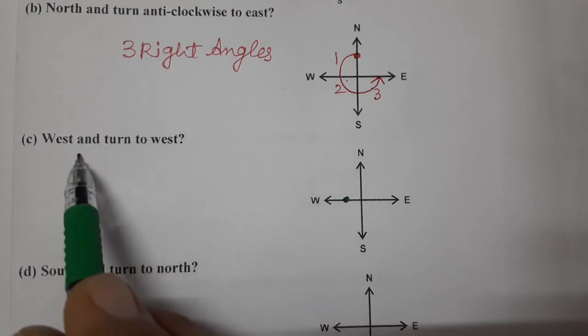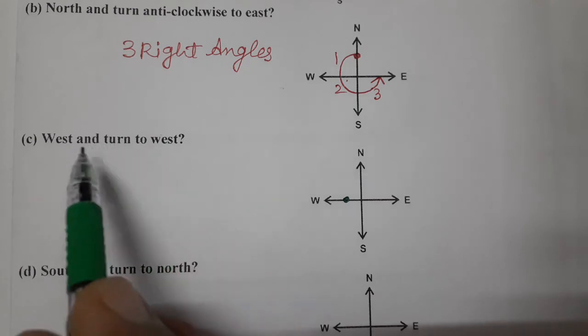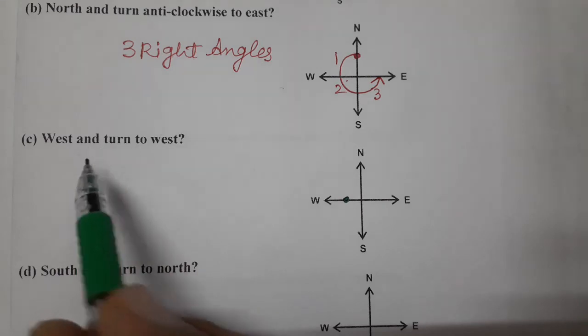So whenever west to west, east to east, north to north, or south to south, whenever we move toward the same direction, then whether clockwise or anti-clockwise, the number of right angles will be the same only.